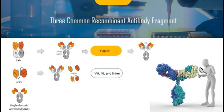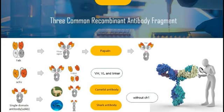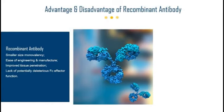scFvs have been developed as possible drug candidates in their own right, as well as components or domains of drug candidates. Single domain antibody, sdAb, is discovered in camelids and nurse sharks, and consists of a lone VH domain lacking a paired VL, attached to a constant region. The primary advantages of domain antibodies compared with scFvs are generally better folding and stability characteristics, the absence of the linker, and smaller size. Compared with conventional antibody, recombinant antibody possesses advantages such as smaller size, monovalency, ease of engineering and manufacture, improved tissue penetration, no animal immunization, broader biodistribution, and lack of potentially deleterious Fc effector function.